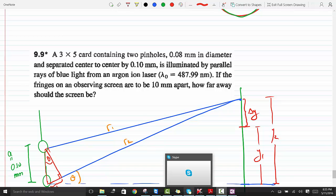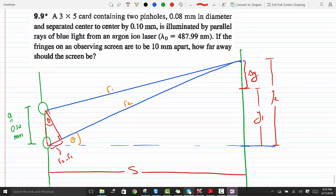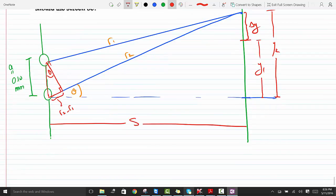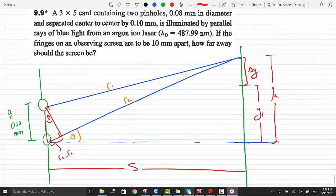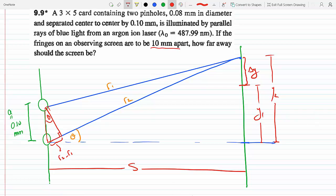Okay, so I drew the figure here for this question. We have two pinholes separated center to center by 0.10 mm—that's the separation between the slits. The light is illuminated by parallel rays with wavelength λ = 487.99 nm. The fringes on an observing screen are said to be 10 millimeters apart, so if one of them is at y₁ and the other is at y₂, Delta Y here is given to be 10 millimeters apart between two consecutive bright fringes.